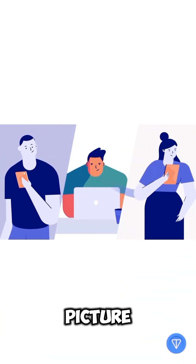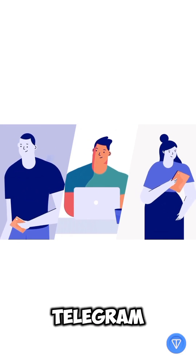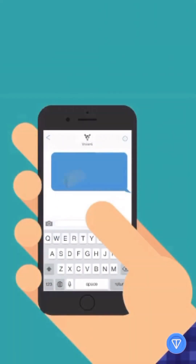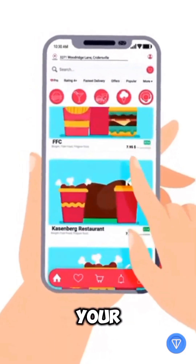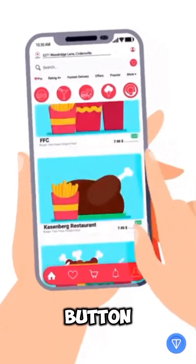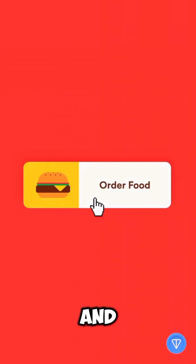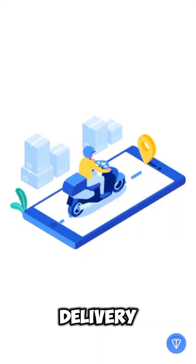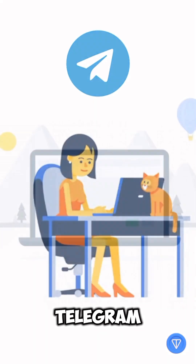Picture this: you're chatting with friends on Telegram. Someone suggests ordering food. Without ever leaving your chat, you tap a button, browse a menu, split the bill, and track your delivery — all inside Telegram.